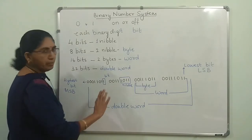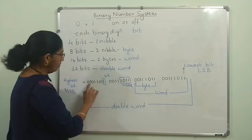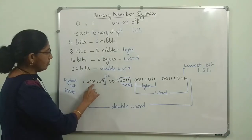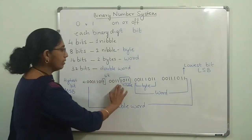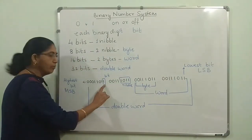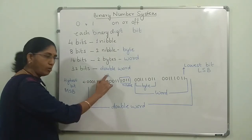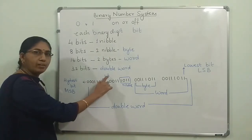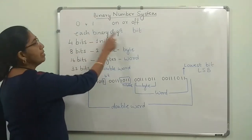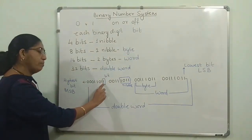I have written down some binary numbers — every number will be represented using 0 and 1 only. For example: 0, 0, 1, 1, 0, 1, 1, 1 — this is being repeated four times here. This single unit is a bit. This 0 is another bit. This 1 is another bit. It is called a binary digit — that is where the term BIT comes from.